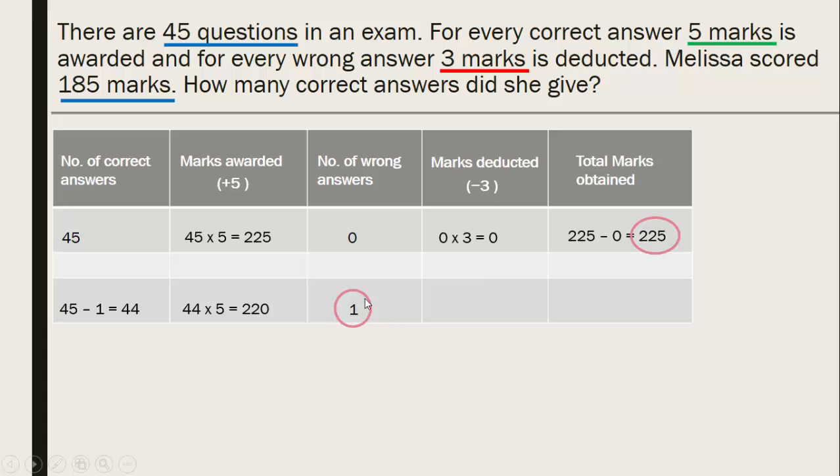Now, what happens to the one wrong answer? That will get a deduction of 3. That is, from her total marks, 3 marks will be deducted. That's because she made one mistake. So now, she's going to get 220 is what she was awarded. But because of that one mistake, she is going to lose 3 marks out of the total. So 220 minus 3 is 217. So just by looking at this, what we can conclude is for every mistake that Melissa makes. In the sense, if she makes one mistake, how much marks will she lose? 225 minus 217, which is 8.